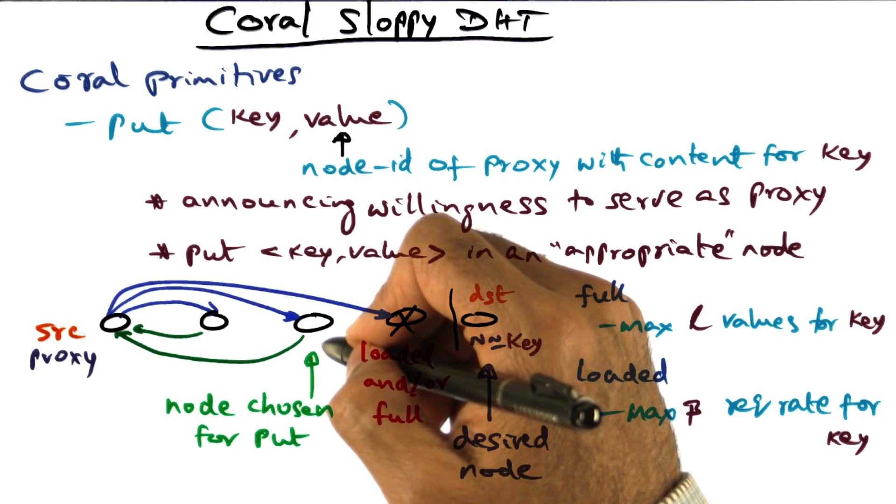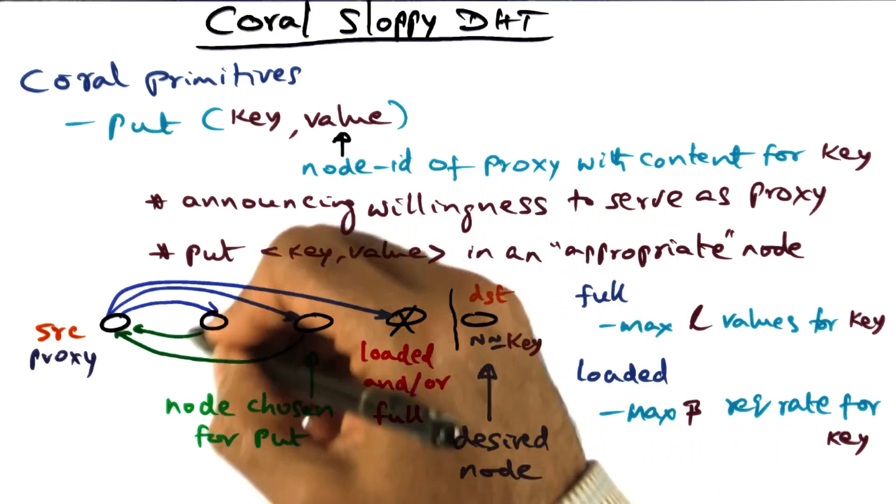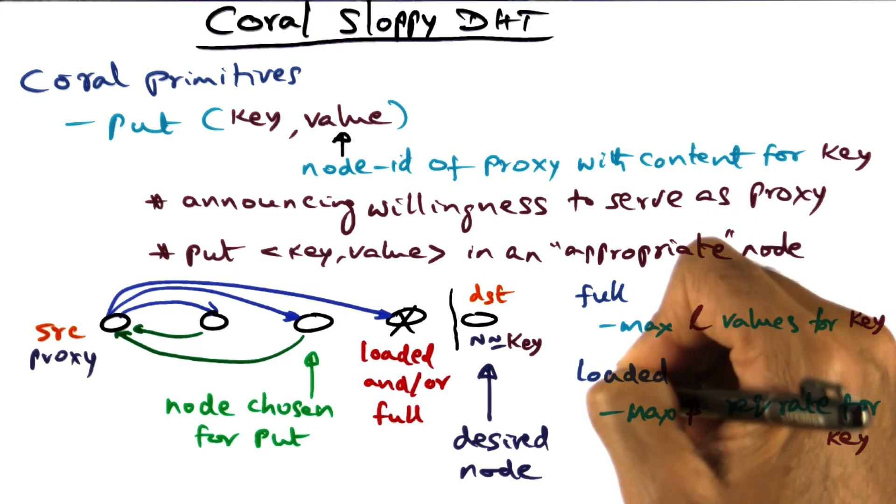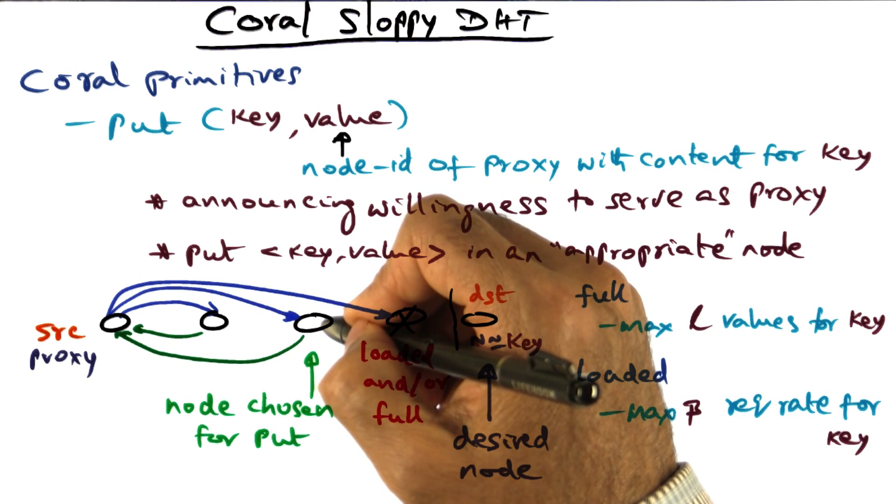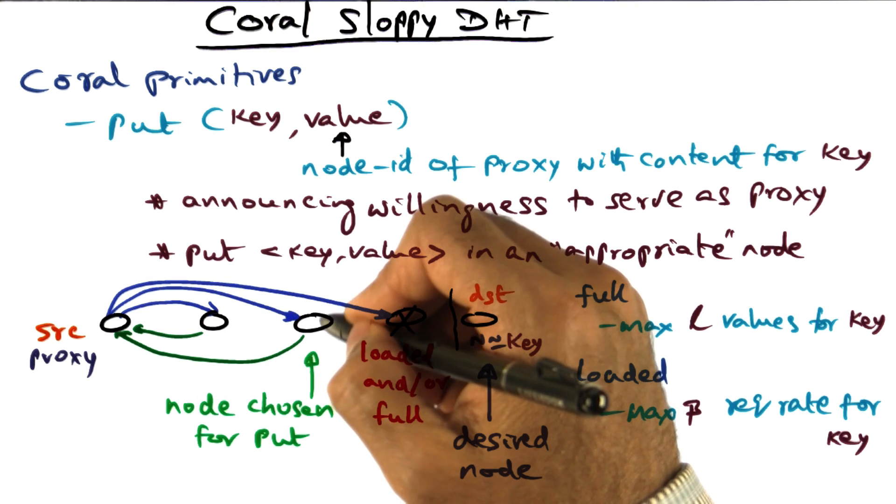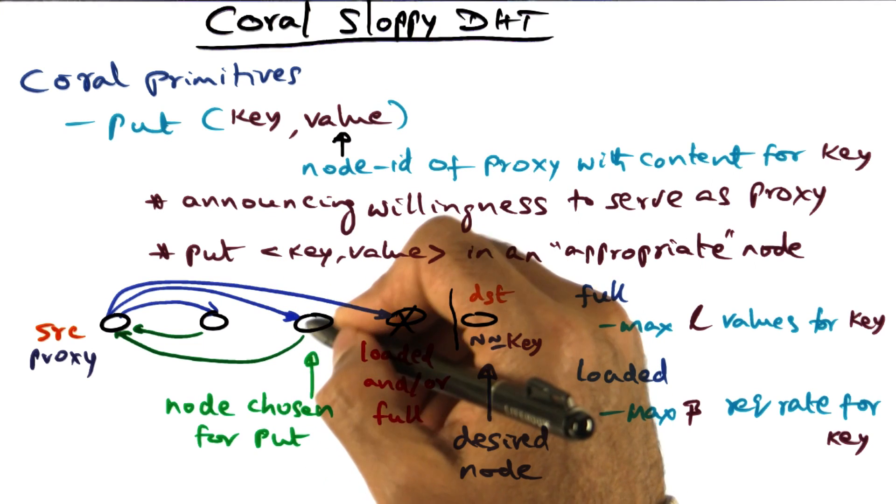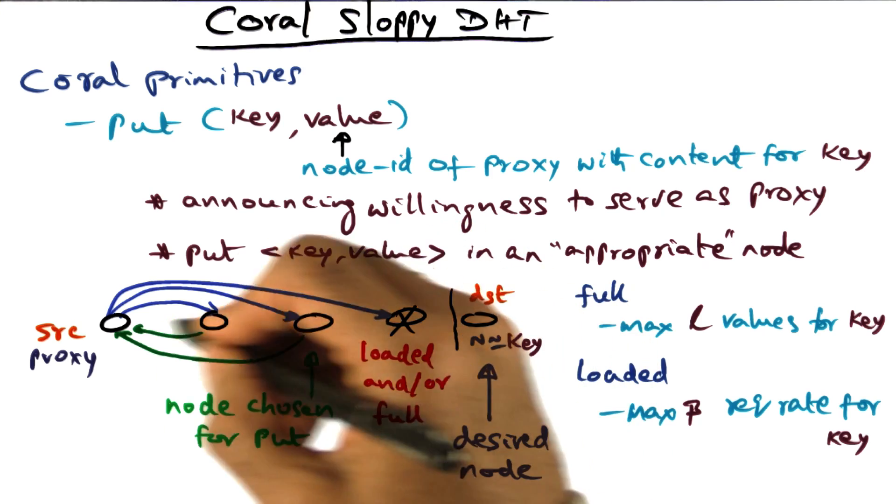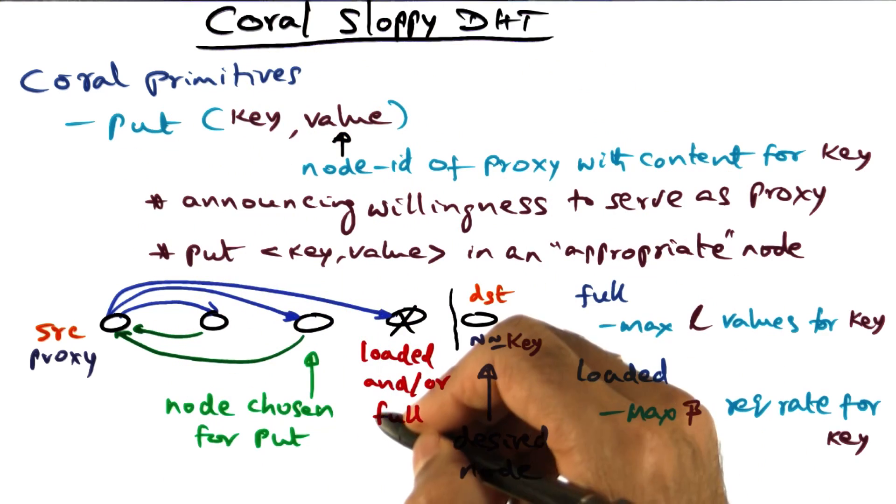Why would he change his mind? Well, between the time that I was making this forward motion, it is possible that this guy got either full or loaded. So I'll recheck the condition. If he says, still I'm good to host your key-value pair, I'll choose this node for the put operation. That's how the Coral put operation works.